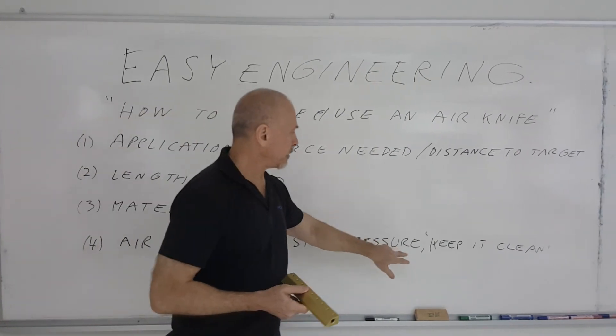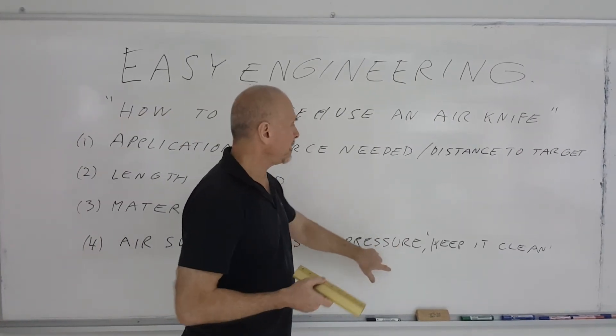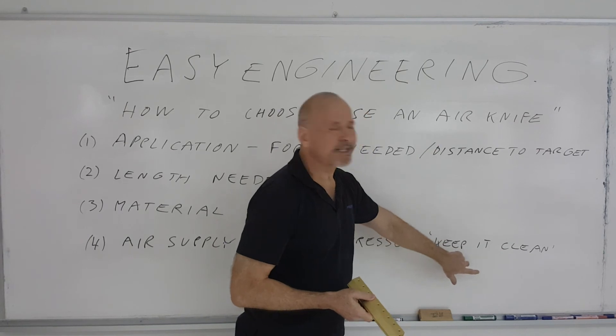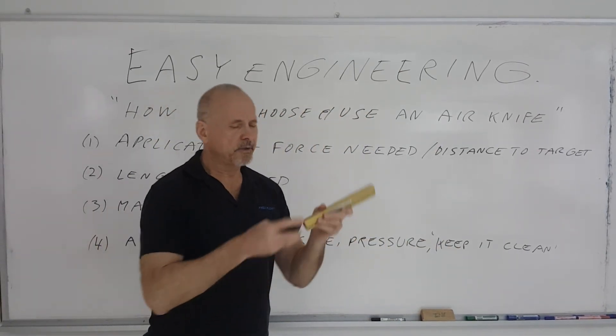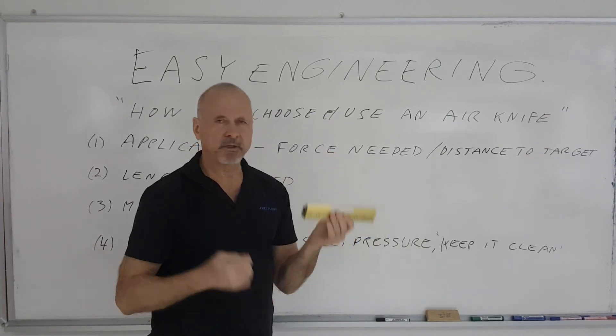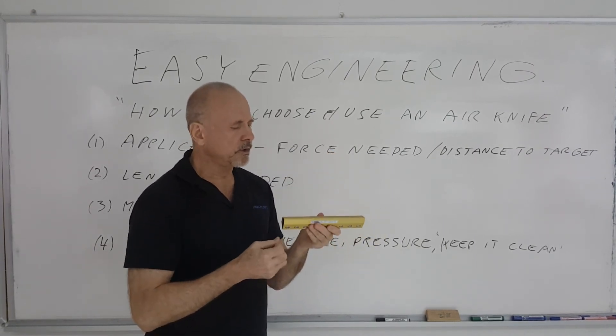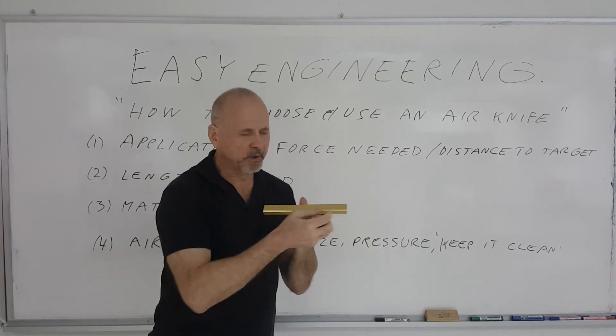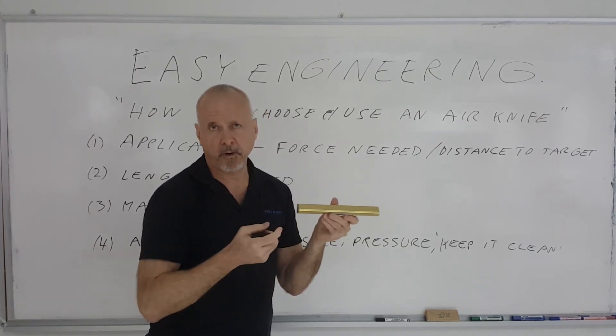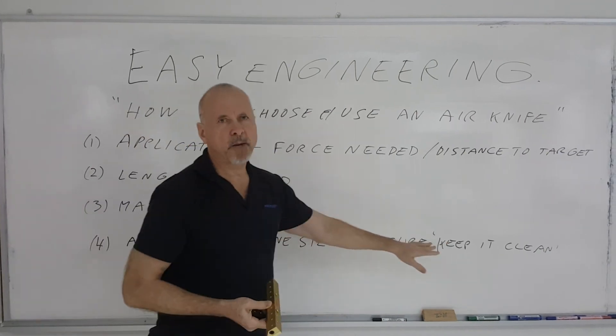You want to make sure that there's adequate pressure at the entrance to the air knife and finally keep it clean. When you're dealing with compressed air operated air knife you're dealing with small gaps. If you have a dirty air line you're going to have that dirt collect inside the air knife and you're going to have spots where it's going to start getting blocked. You'll get uneven flow. So you want to keep it clean with proper filtration.